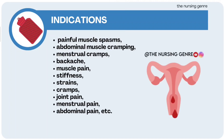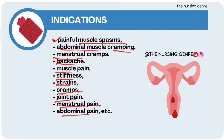Indications for hot water bag use: painful muscle spasms in the back or neck, abdominal muscle cramping, menstrual cramps — pain during period time. Also used for general muscle pain, stiffness, strain, cramps, joint pain, menstrual pain, and abdominal pain. In these situations, we use the hot water bag.